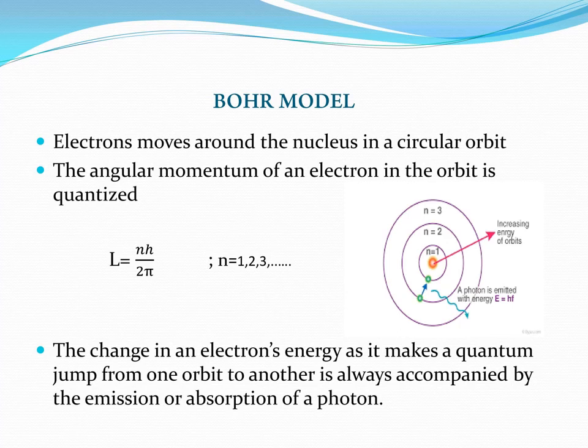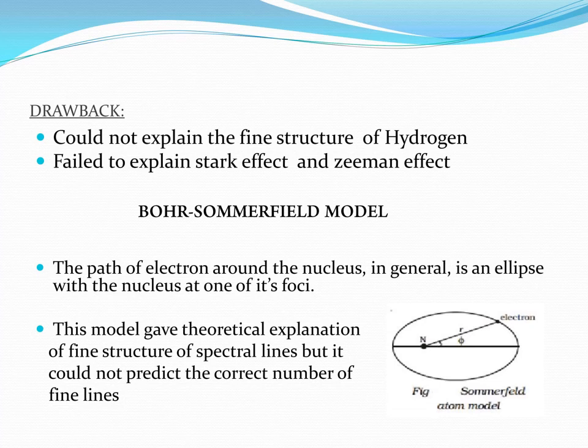The electron revolves around the nucleus in a circular orbit. According to Bohr's model, the angular momentum L is equal to nh divided by 2pi. Electrons revolve in orbits and transitions emit or absorb a quantum of energy. The Bohr model is a drawback — it could not explain the fine structure of hydrogen, the Stark effect, or the Zeeman effect.